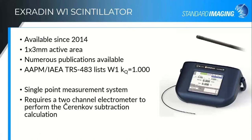Limitations of the W1 are that it is a single point measurement system, designed initially for output factor measurements. It also requires a two-channel electrometer to perform the Cherenkov subtraction calculation. We have the routine built into our Supermax — it will walk you through the characterization and dose calibration, then apply that correction and do the calculation for your later measurements. If you use someone else's two-channel electrometer, you'll have to do the math yourself, but it is of course possible.